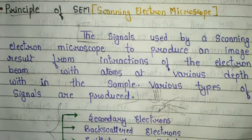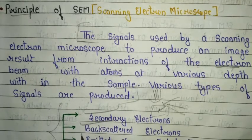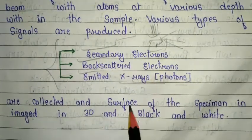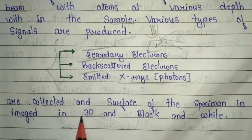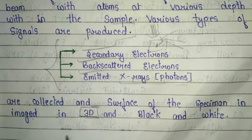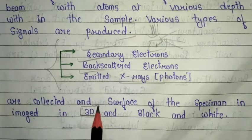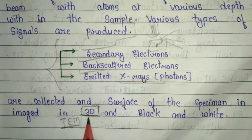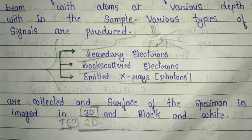Three types of signals are produced: secondary electrons, backscattered electrons, and emitted X-ray photons. These three types of signals are collected and the surface of the specimen is imaged in 3D and black and white. So we get a 3D image from the scanning electron microscope. When we use TEM — transmission electron microscope — we get a 2D image. This is the basic difference between SEM and TEM.